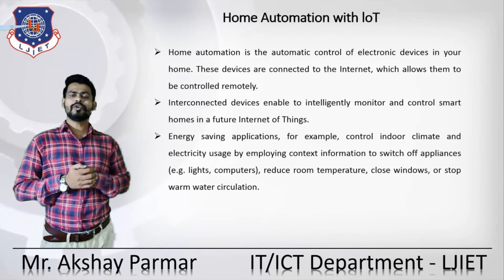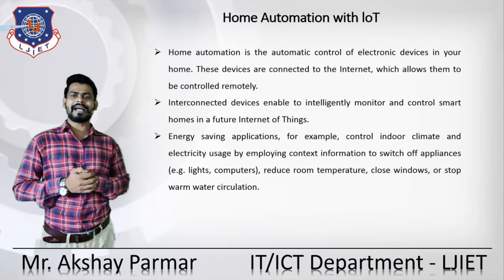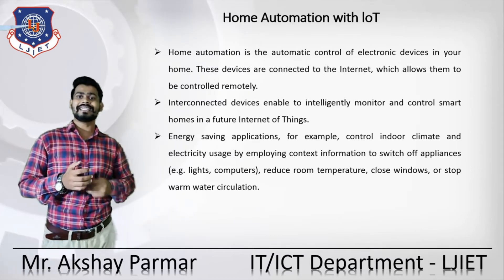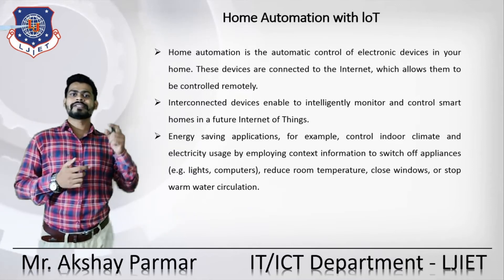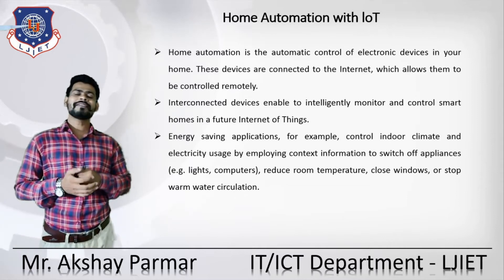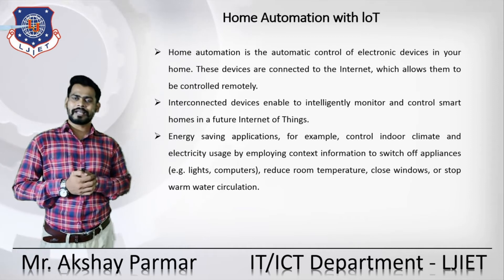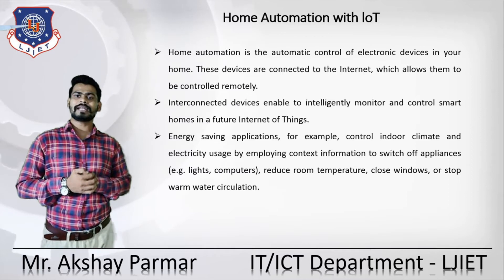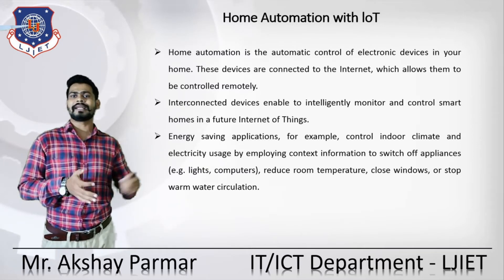Let's now see home automation with IoT — a basic application of IoT. Home automation is the automatic control of electronic devices in your home. These devices are connected to the internet, which allows them to be controlled remotely. With the help of any application or particular triggering mechanism, we can control things on our fingertips. Interconnected devices enable intelligent monitoring and control of smart rooms in the future Internet of Things.